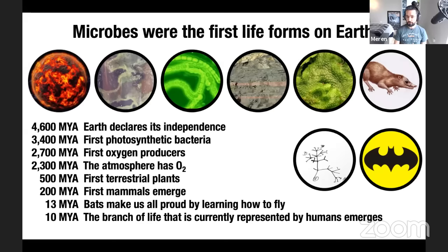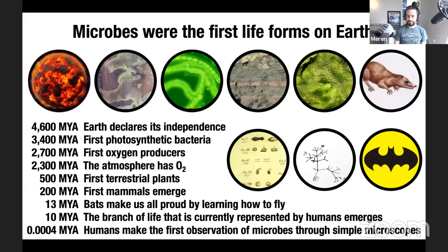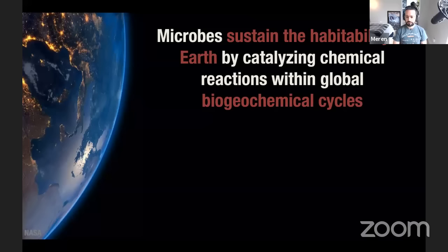The branch of life represented by humans emerged about 10 million years ago, and only about 400 years ago did humans first observe microbes through simple microscopes. When you look at this entire timeline, you realize how much of this planet and life on it depended on microbes. Another statement you often hear from microbiologists is that microbes still sustain the habitability of this planet by catalyzing chemical reactions within global biogeochemical cycles.